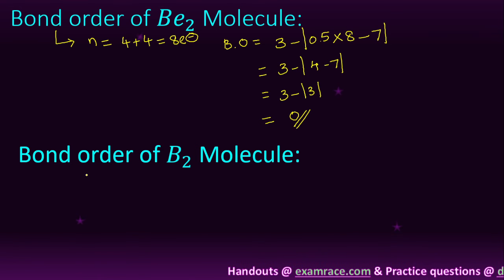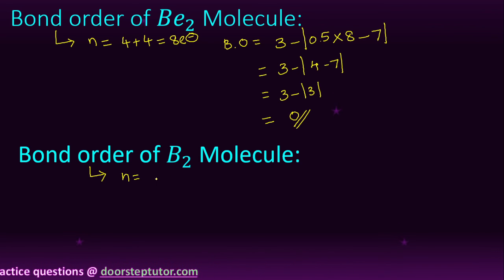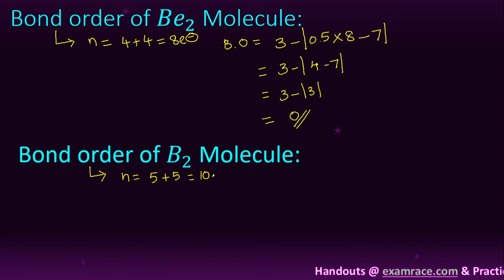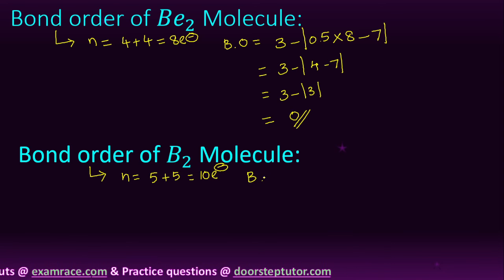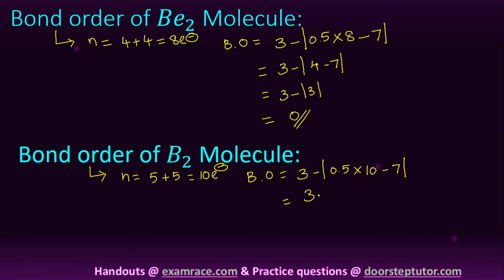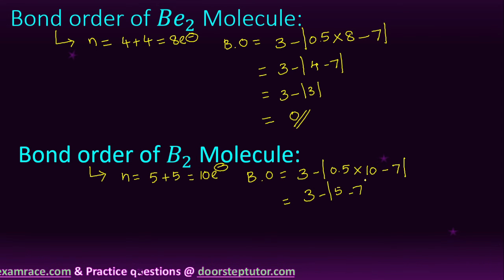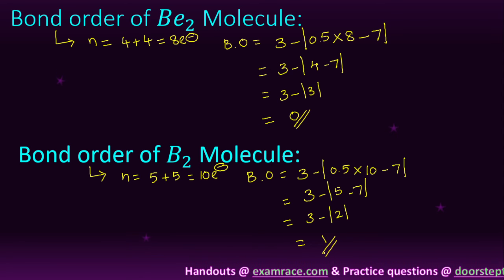Next, we calculate the bond order of B₂ molecule. Boron has atomic number 5, so the total number of electrons is 5 plus 5 = 10 electrons. Bond order = 3 minus modulus of (0.5 × 10 − 7) = 3 minus modulus of (5 − 7) = 3 minus modulus of (−2) = 3 minus 2 = 1. The bond order of B₂ molecule is 1.